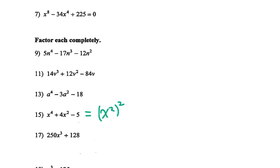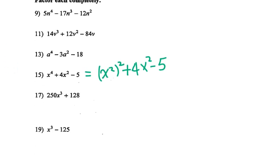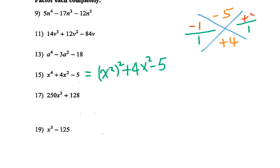For number 15, it's still a twisted quadratic function. I write down x squared, then squared, plus 4x squared minus 5. I do ninja X: negative 5, positive 4, over 1, over 1. For negative 5 I can do negative 1 times positive 5. The variable is x squared and x squared. Check: x squared times x squared is x to the fourth power, and negative 1 times negative 5 gives positive 5 — wait, product is negative 5 — so this is the correct answer.